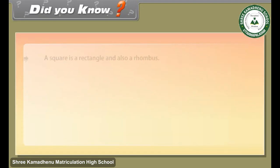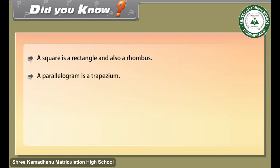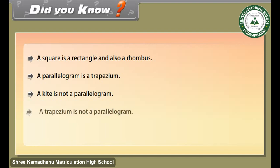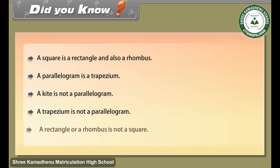Did you know? A square is a rectangle and also a rhombus. A parallelogram is a trapezium. A kite is not a parallelogram. A trapezium is not a parallelogram. A rectangle or a rhombus is not necessarily a square.